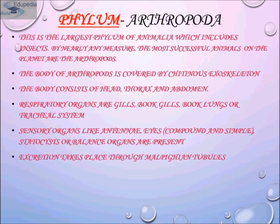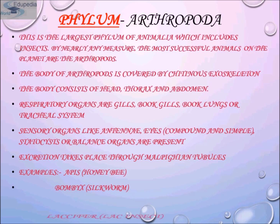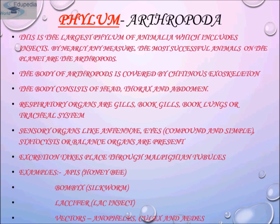The nervous system is ventral, located on the belly side, and the circulatory system is open and located on the dorsal side, that is the back side. Examples of this phylum are Apis (honeybee), Bombyx (silkworm), Laccifer (lac insect), and vectors such as female Anopheles, Culex, and Aedes.